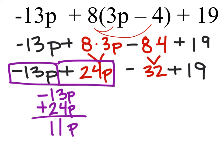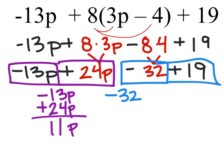Next, I'm just going to do the same thing with these other two terms, because they do not have p's. These are just constants or numbers. And we have the negative 32, and then we have the positive 19.